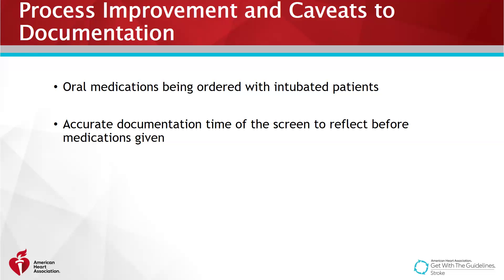One area we noticed many fallouts were our intubated patients. Medications were being ordered and documented by mouth, but they were actually given via OG or NG tubes because the patients were intubated. We worked with the ICU educators who created an alert inside our electronic medical record that reminds nursing to ensure the medications are ordered for the correct route. Another area for improvement was the time of the dysphagia screening being documented after PO medications were given. Nurses were performing the swallow screen and then administering the medication but documenting it backwards. Education and reinforcing have become a part of our process for improving documentation accuracy.